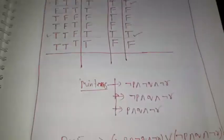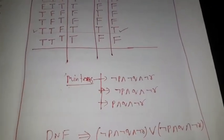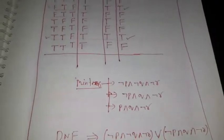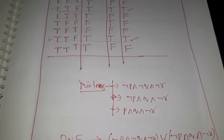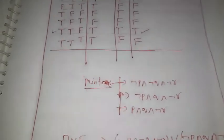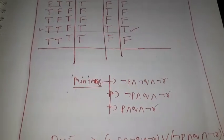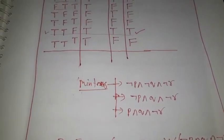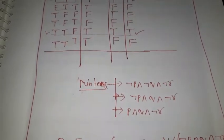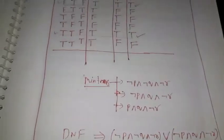So this is the DNF of the given propositional expression. In this way, we can convert any boolean expression into DNF using the truth table. In the next video we will consider how to convert a boolean expression into CNF, how to convert DNF into CNF and CNF into DNF, and how to simplify them without using a truth table. Thank you.